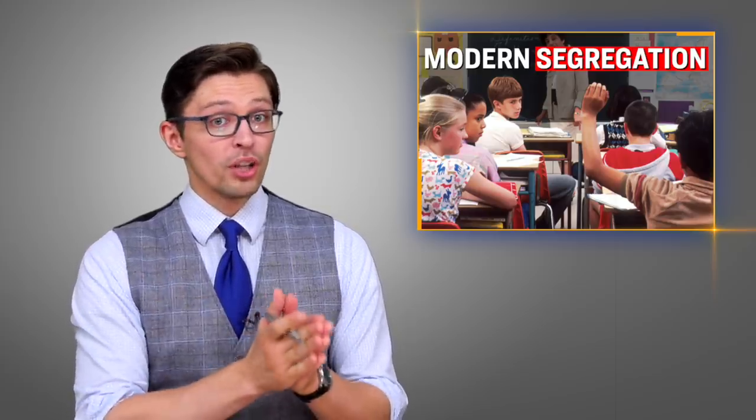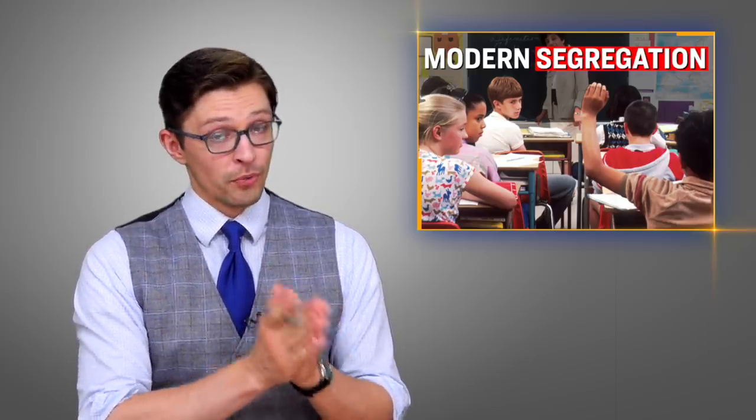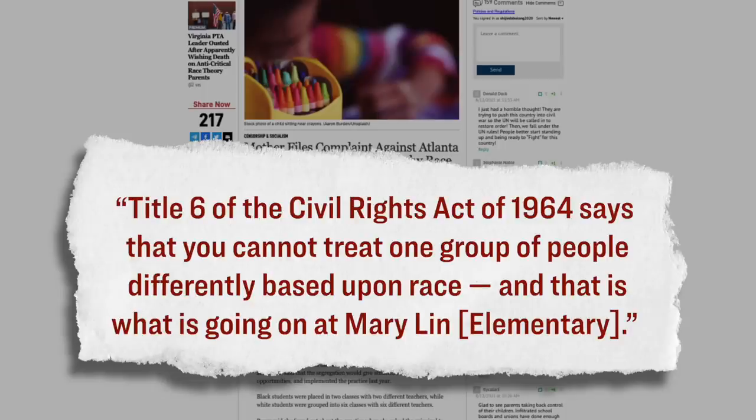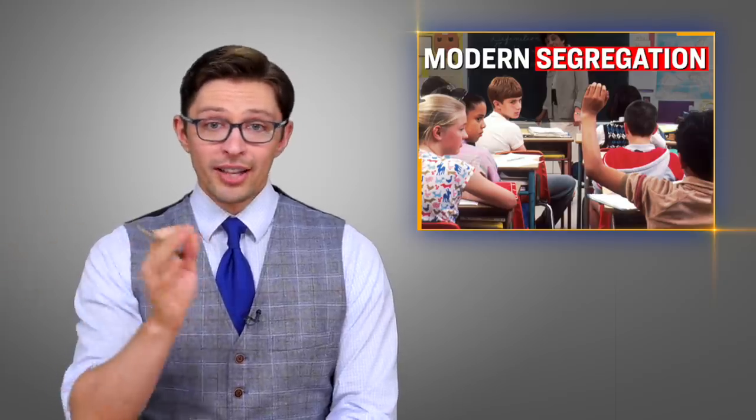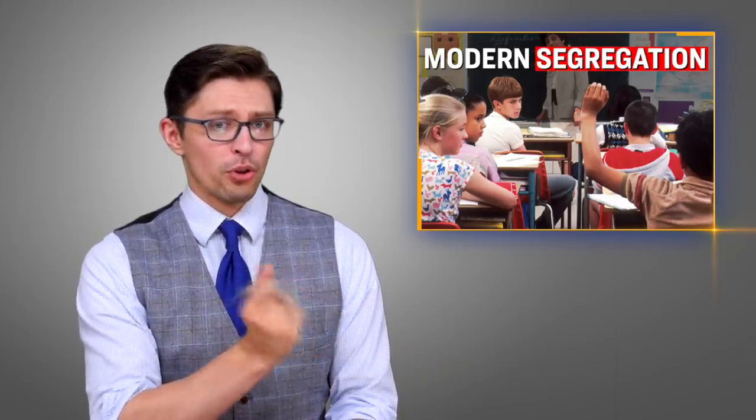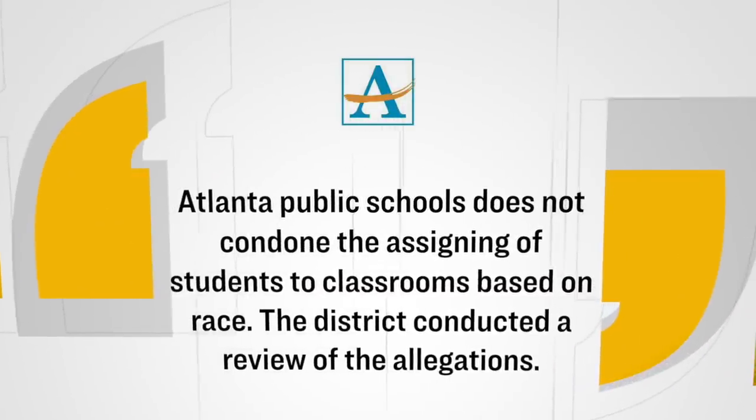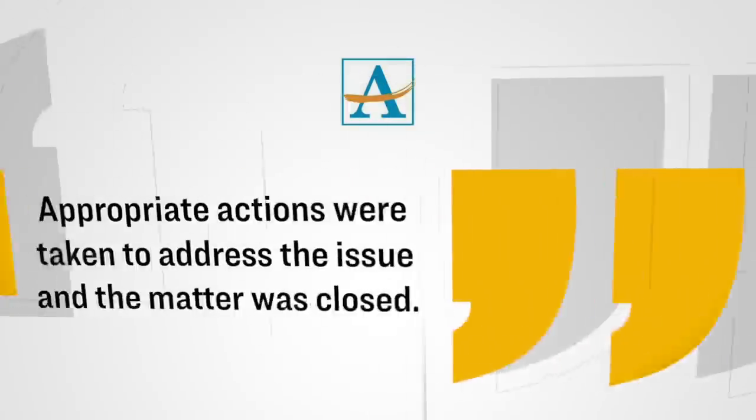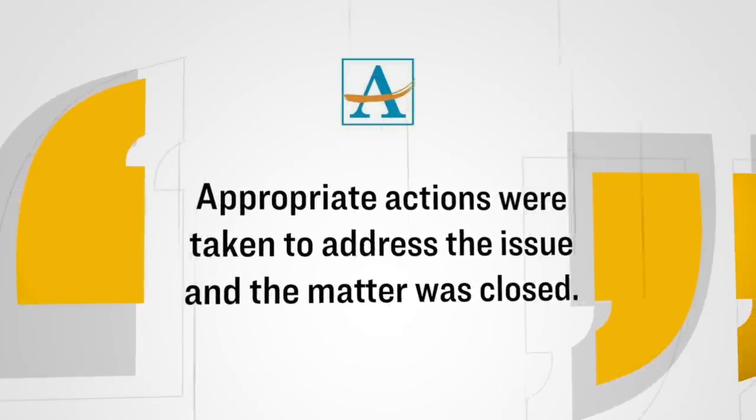According to her lawyer, by conducting segregation, the school is violating federal law. He said, Title VI of the Civil Rights Act of 1964 says that you cannot treat one group of people differently based upon race. And that is what is going on at Maryland Elementary. According to Fox News, the Atlanta Public School District confirmed that they probed these allegations and they took what they called appropriate actions, although they did not elaborate what those were. The district said it does not condone the assigning of students to classrooms based on race. Appropriate actions were taken and the matter was closed.